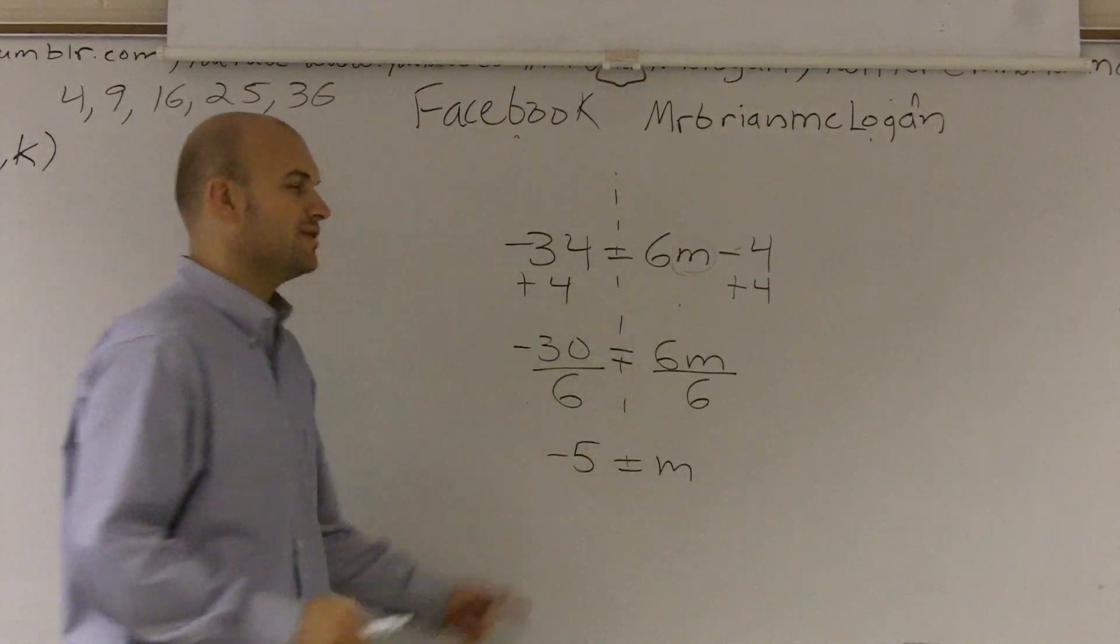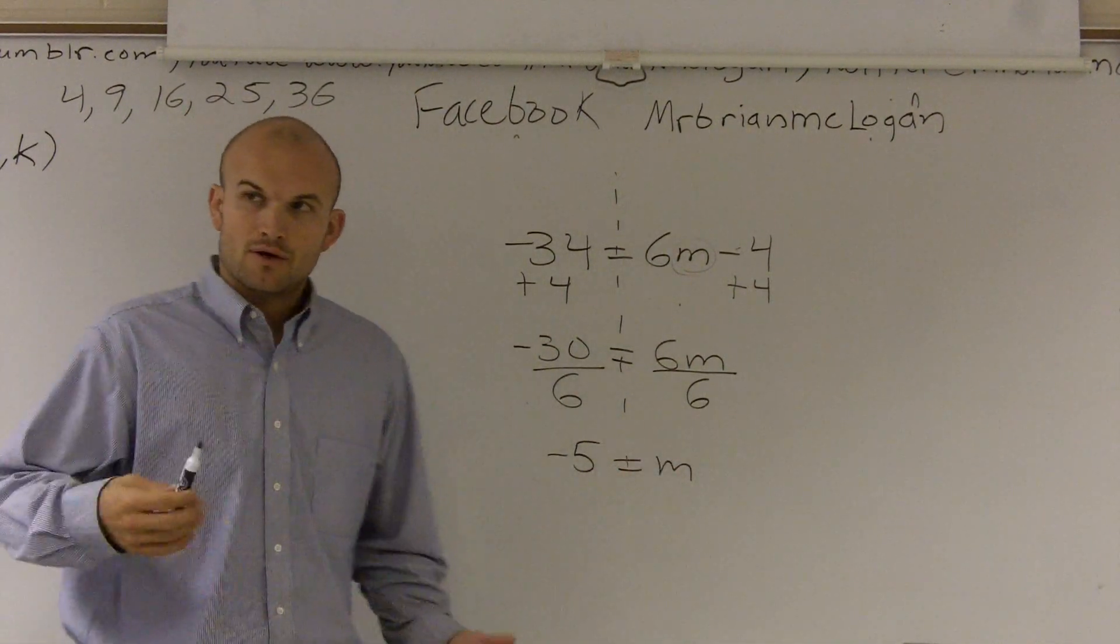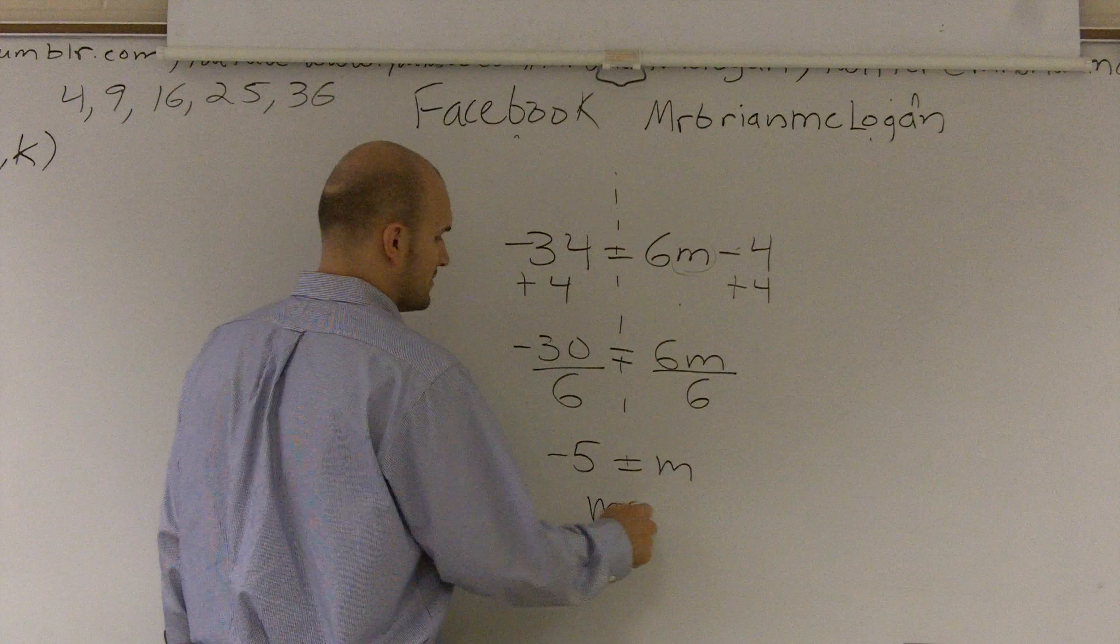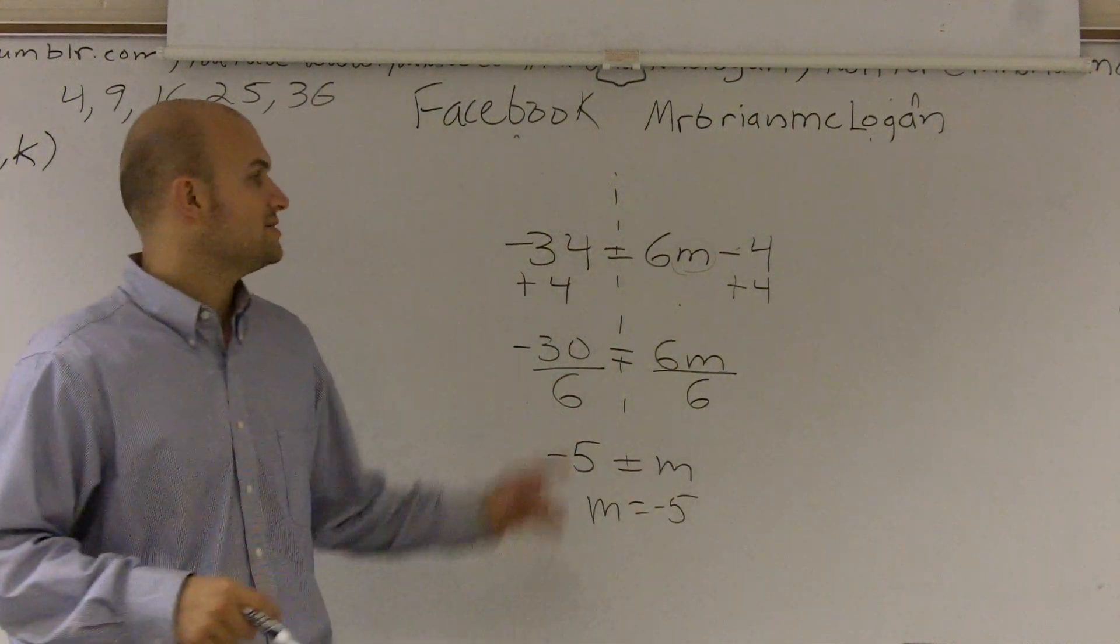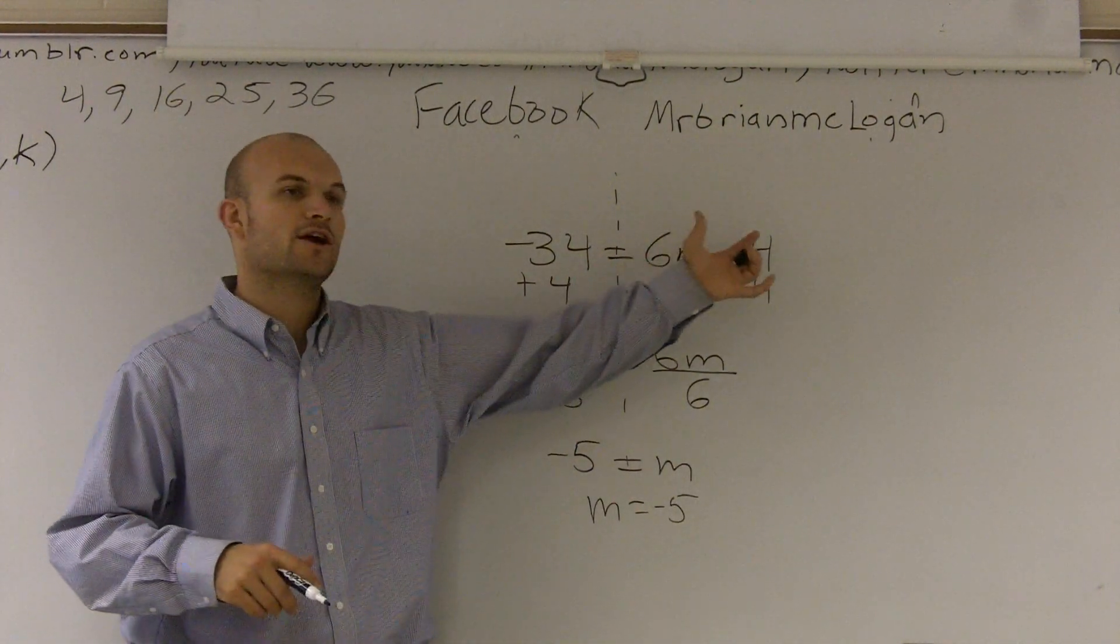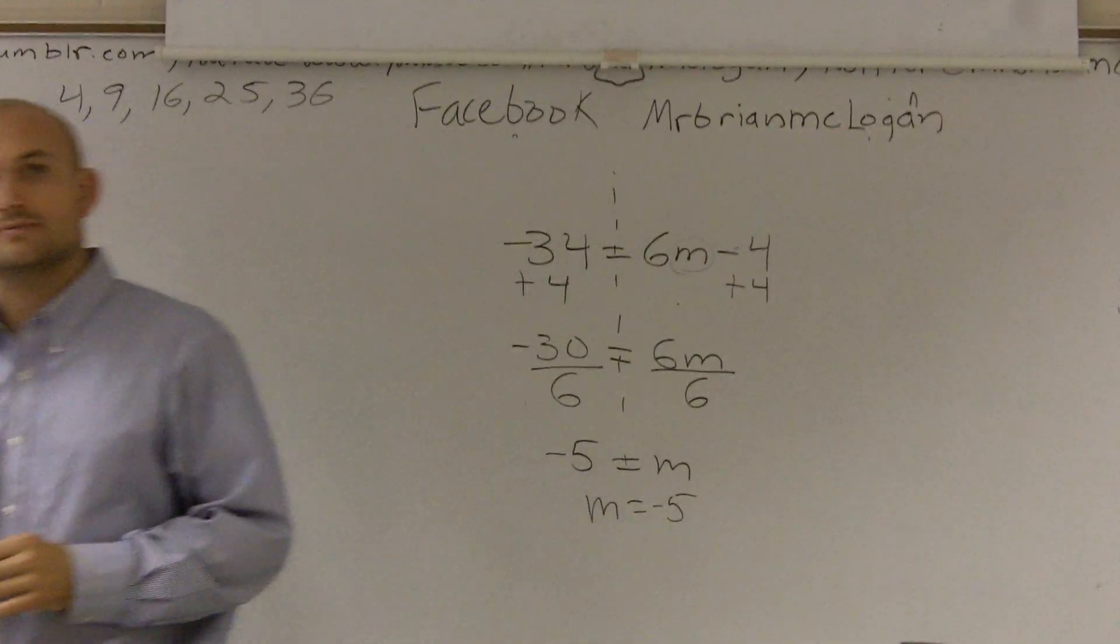Then we don't really like to write it as negative 5 equals m. We like to write m equals negative 5. So that is how you solve a two-step equation when you have your variable on the right side of the equation.